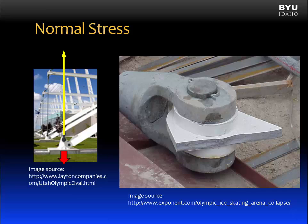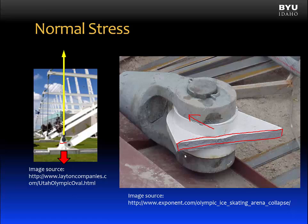What happened to this anchor that caused this accident? Here's a picture of that anchor on the outside of the structure. Here's the load, which is the weight of the roof, and here is the foundation supporting that load. What happened was this anchor fractured — you can see that fracture in the surface. This surface, just prior to the accident, was resisting a force from the weight of the roof. That induced a normal stress over this cross-section, but the stress exceeded the material strength, and it failed.